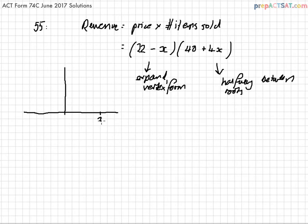One of the roots is at 22, and the other root is at 40 plus 4X equals 0. That's where X is negative 40 over 4, which is negative 10.